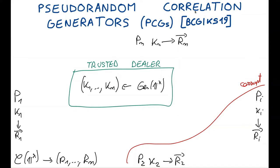It may seem strange that we base our triple generation protocol on PCG constructions that need a trusted dealer for seed generation. Indeed, the whole point of a triple generation protocol is to get rid of trusted dealers in SPEEDS. However, the PCG seeds are small, so it is not hard to design multi-party computation protocols that generate and distribute them with linear communication in the seed size. When we compose these protocols with the expansion phase — which is trivially secure because the expansion is not interactive — we obtain protocols that generate large amounts of correlated randomness with sublinear communication in the size of the outputs.